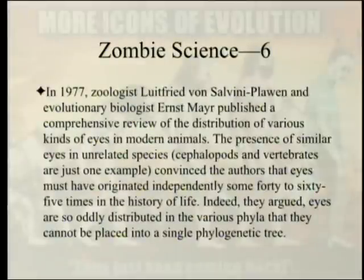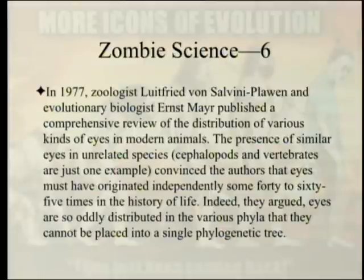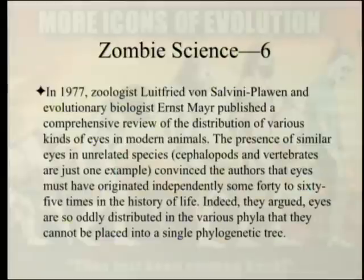In 1977, zoologist Salvini-Plawen and evolutionary biologist Ernst Mayr published a comprehensive review of eye distribution in modern animals. The presence of similar eyes in unrelated species — cephalopods and vertebrates being one example — convinced the authors that eyes must have originated independently some 40 to 65 times in the history of life. That wasn't expected. They argued eyes are so oddly distributed among phyla that they cannot be placed in a single phylogenetic tree. Whenever someone invokes a nested hierarchy, ask whether the eye fits — the obvious answer is no.